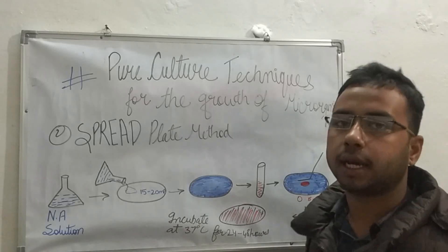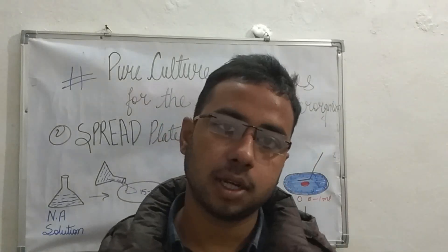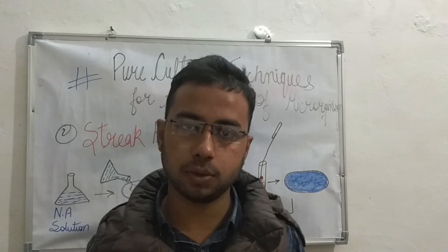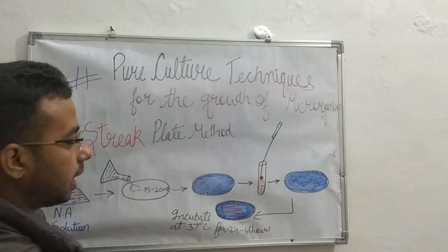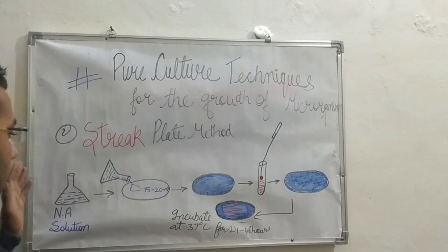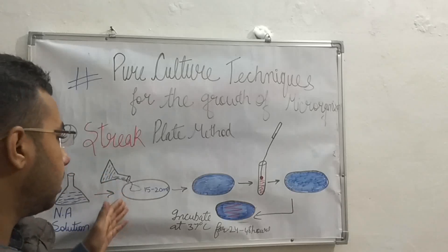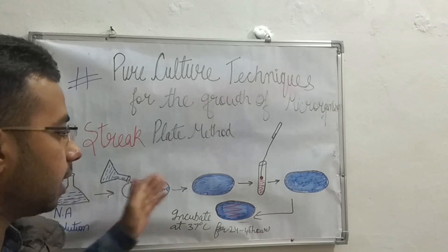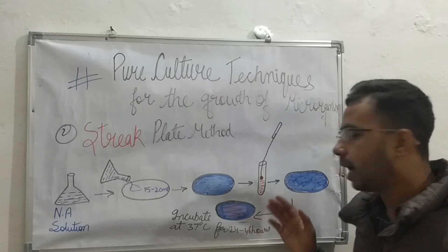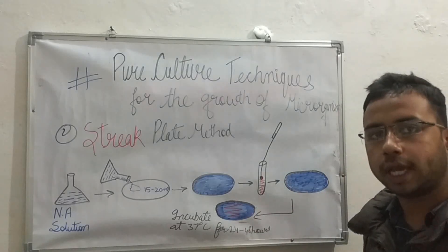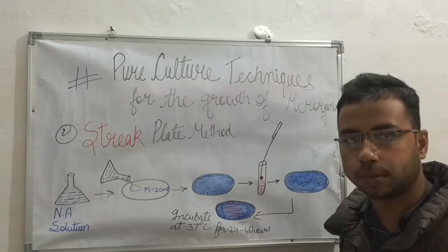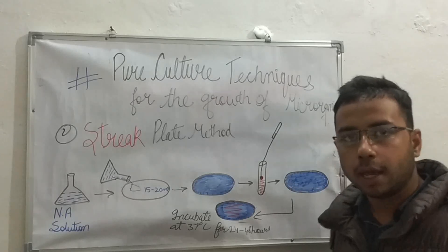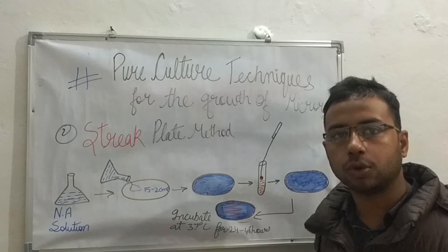Now we come to the third method — the streak plate method. The initial procedure is the same: take the nutrient agar solution, pour 15 to 20 ml into a sterile petri plate, and wait for solidification. After solidification, the step changes — we take an inoculating loop and draw a zigzag line on the agar surface using the microbial sample.